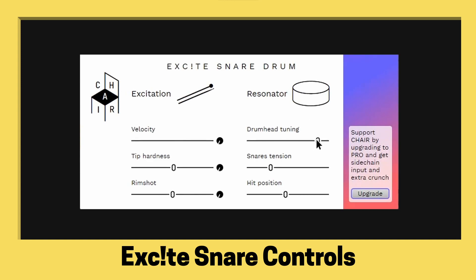Drum tuning controls how tightly the drum is tuned. Snare tension affects how tight the snares are pressed to the bottom of the snare drum. Hit position affects the proximity at which the tip of the stick hits from the center of the drum.